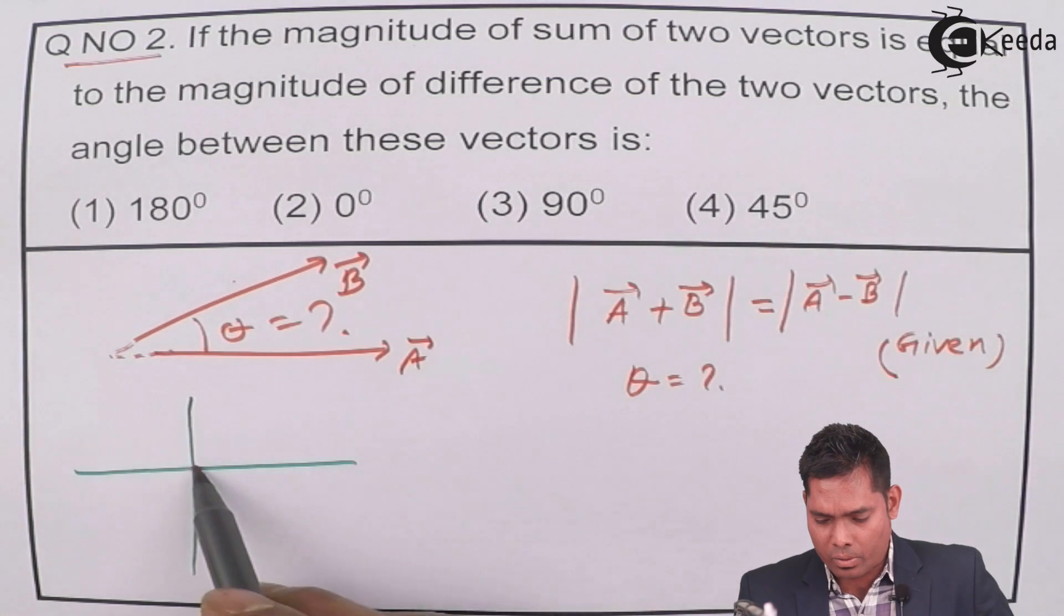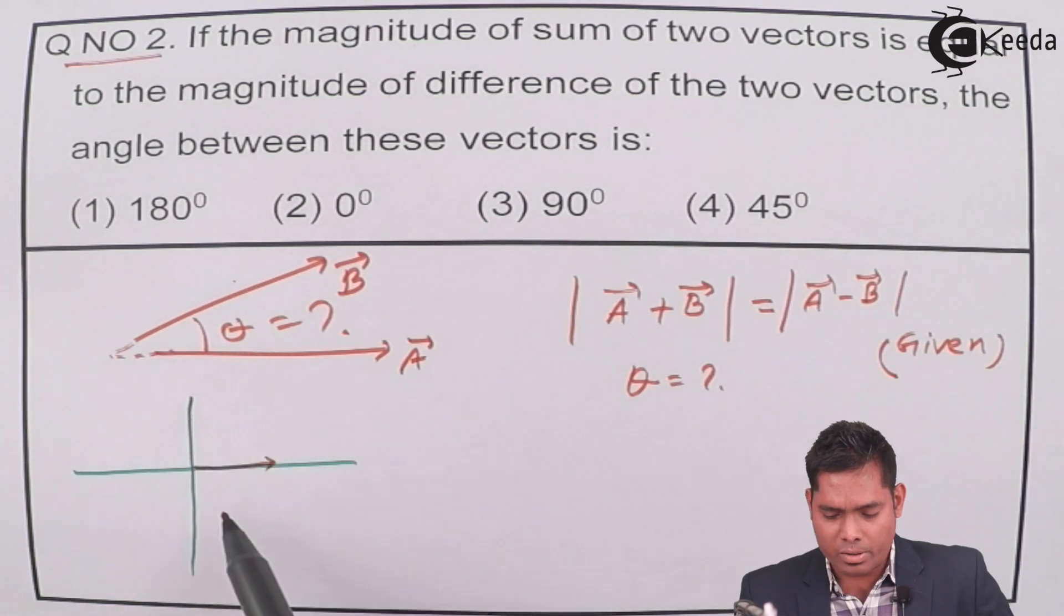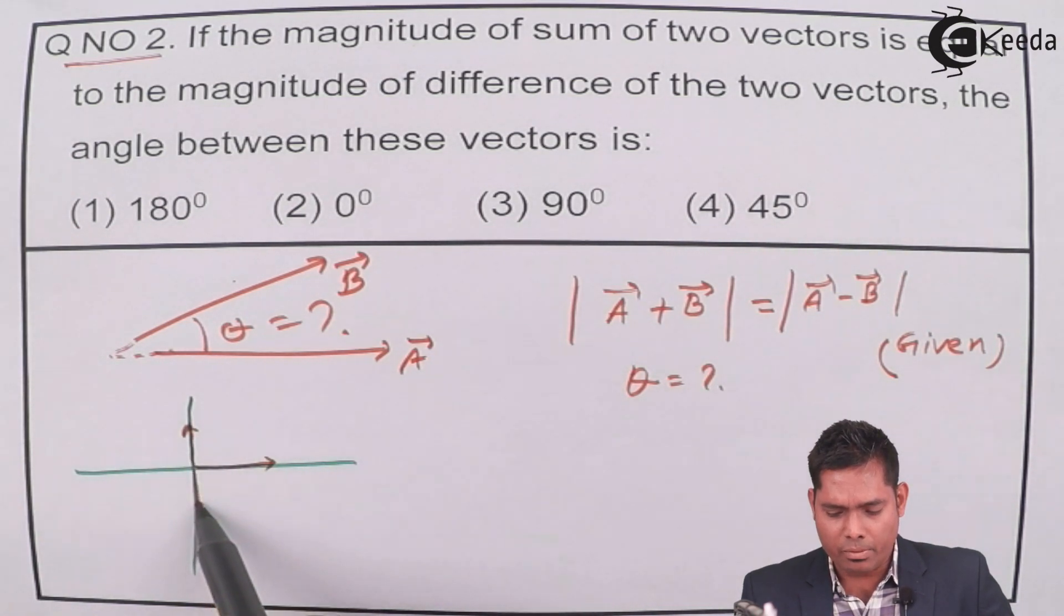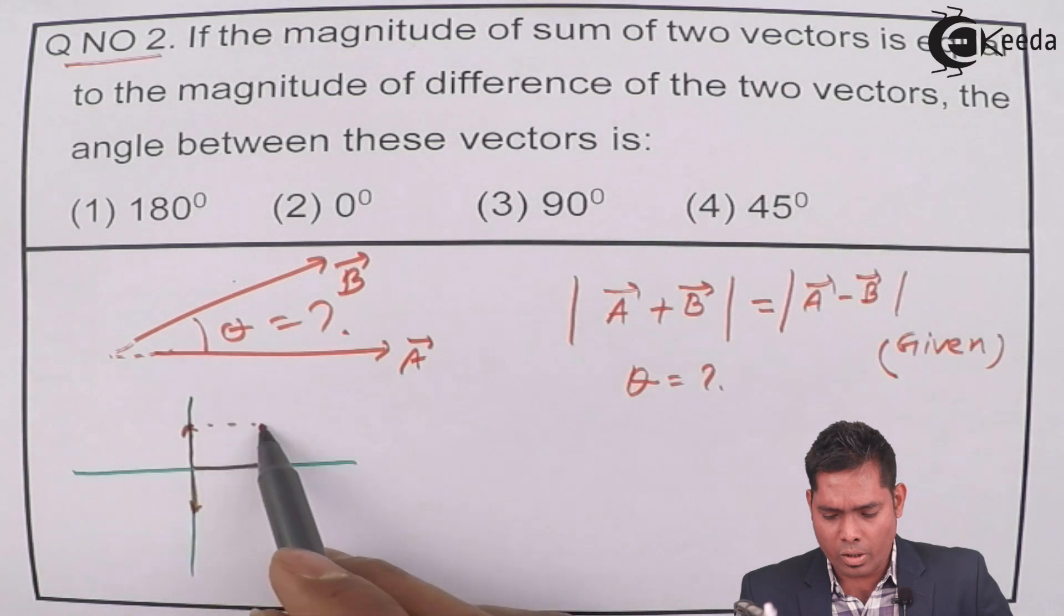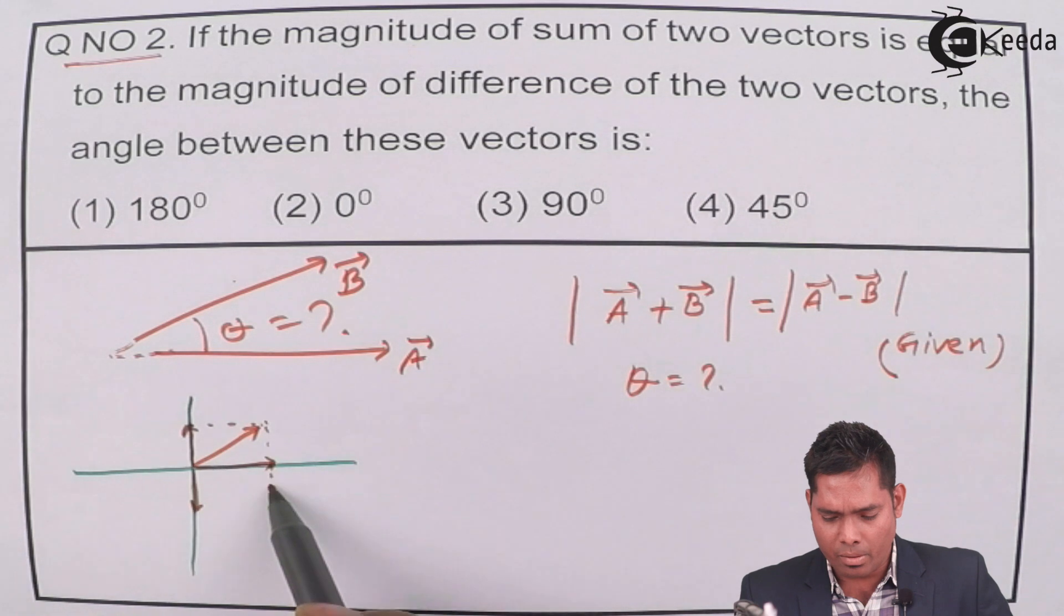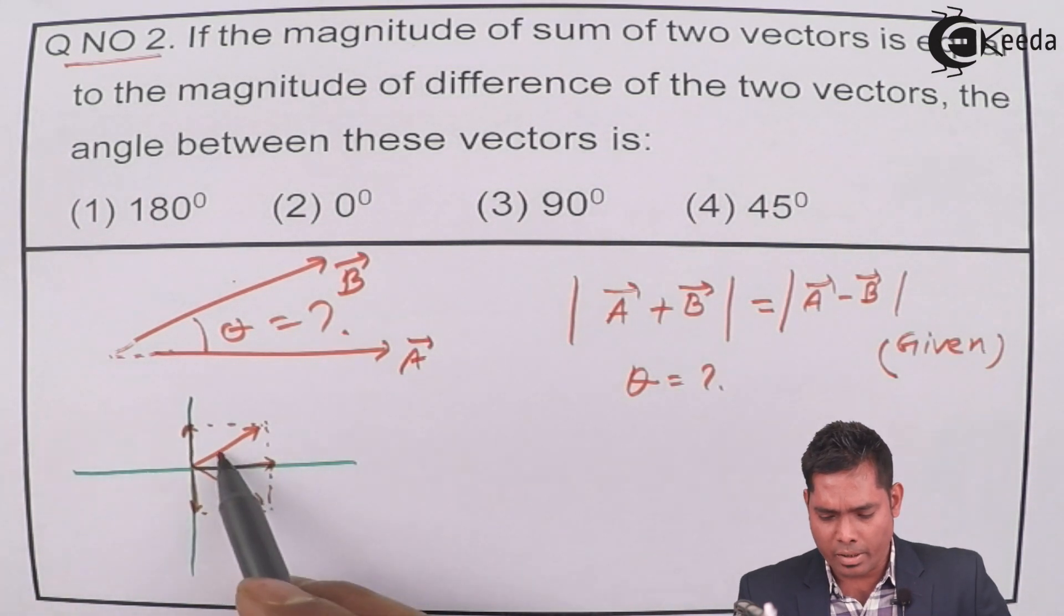Because I know that if I keep one vector B, and this is my B vector, then this will be minus B vector, then the sum of A plus B will be in this direction, and the same amount it will be here, mirror images,